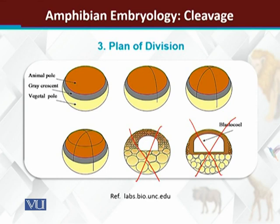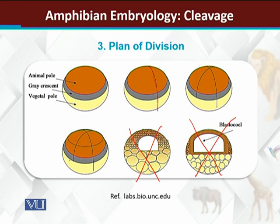Diagrammatically, we can see the fertilized egg with the animal pole shown in gray and the vegetal pole in yellow, with the gray crescent between them. The first cleavage starts at the animal pole and moves toward the vegetal pole. The second cleavage is at a right angle to the first. After that, the third cleavage and further cleavage patterns follow. The two diagrams with crosses are not part of the cleavage sequence and have been crossed out.